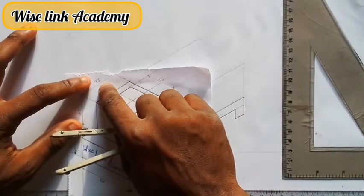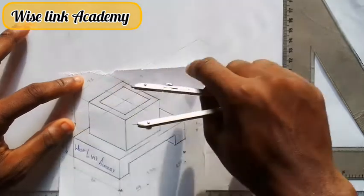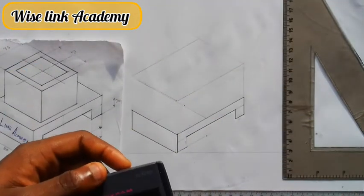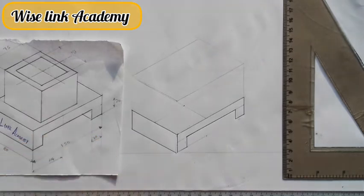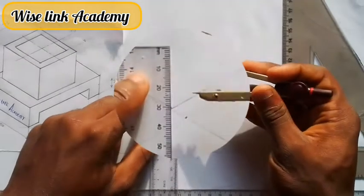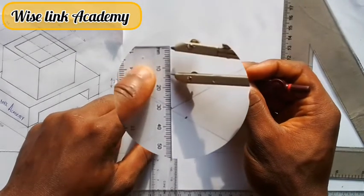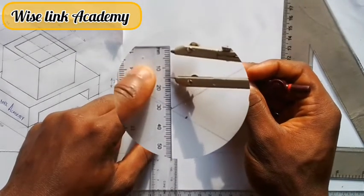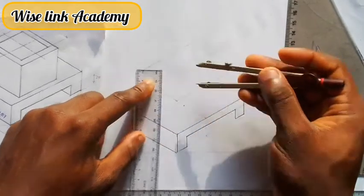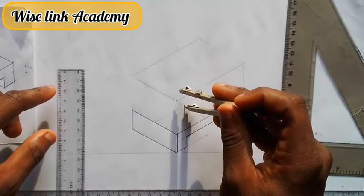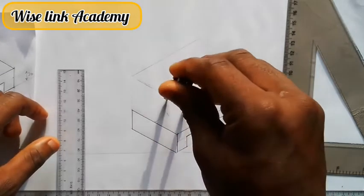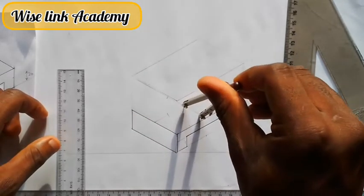Now, how will I establish 37.5 on this place? We divide 37.5 by 2 and get 18.75. So I will measure 18.75 — from this point to this point. I will take it at this center point here and draw an arc: here, up here, and down this way.